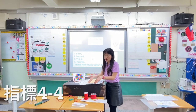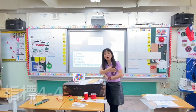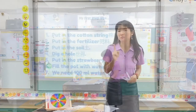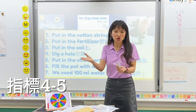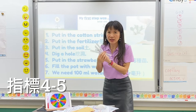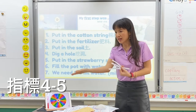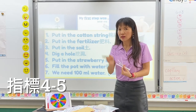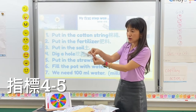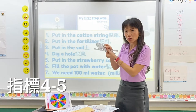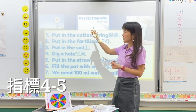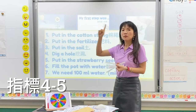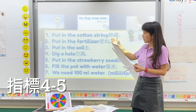I want you to share your procedure — the steps — with your whole class. Lisa and Abigail, would you please share your sequence with your classmates? Here are the sentence strips. First, put in the cotton string — 我们要放什么？对，放棉绳.